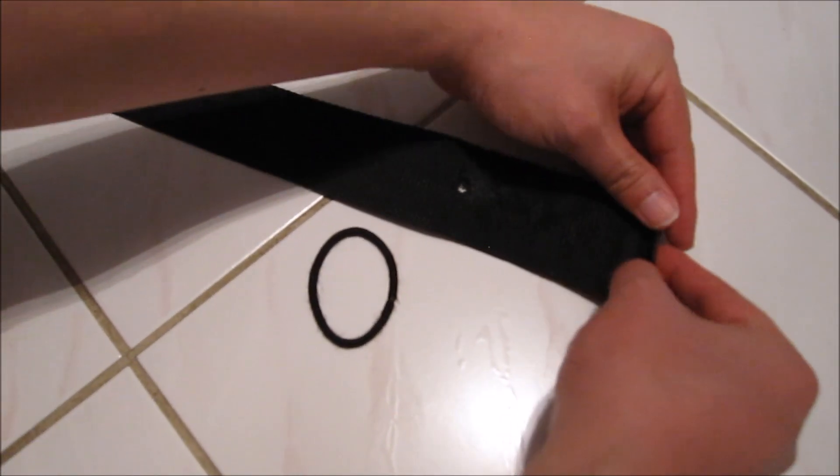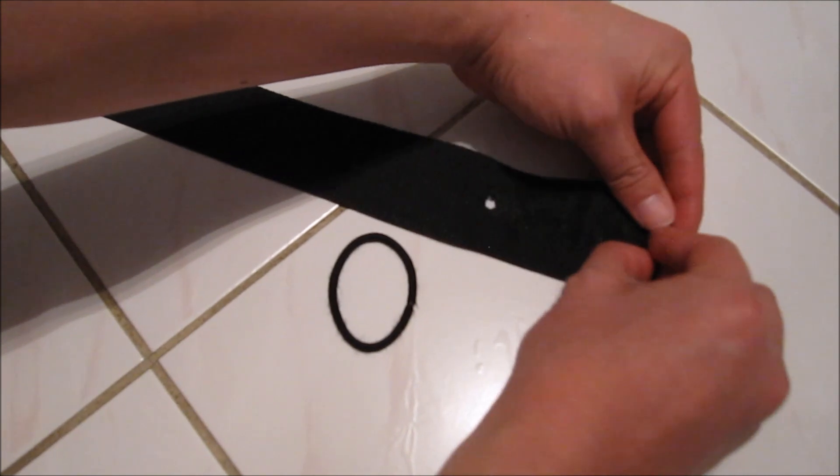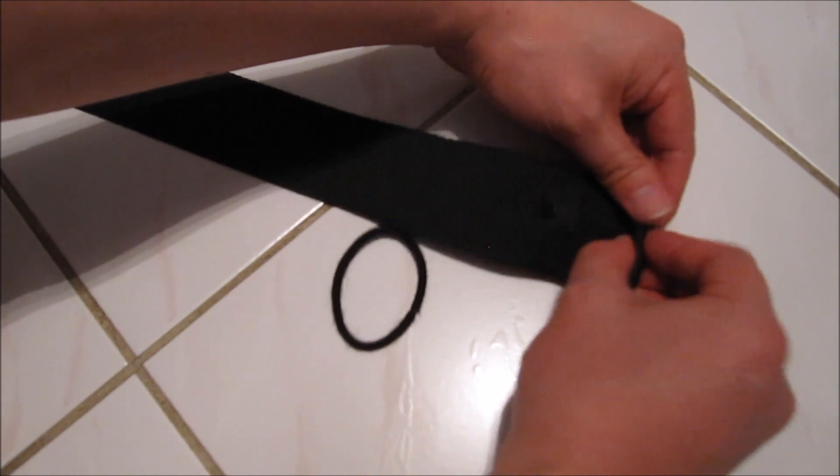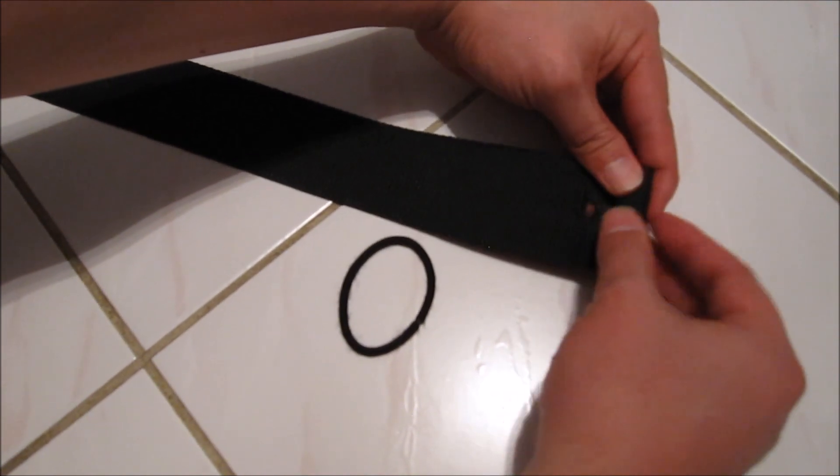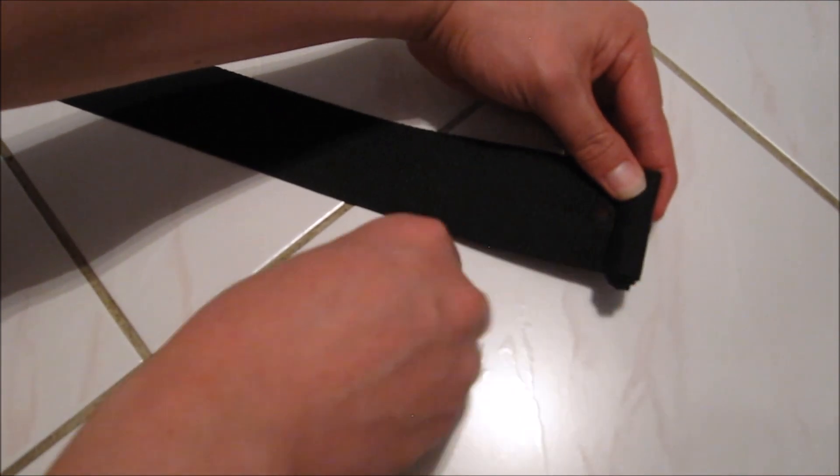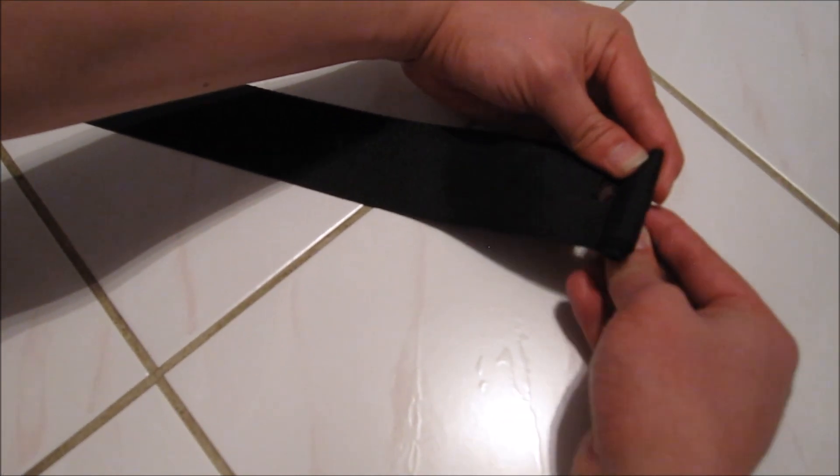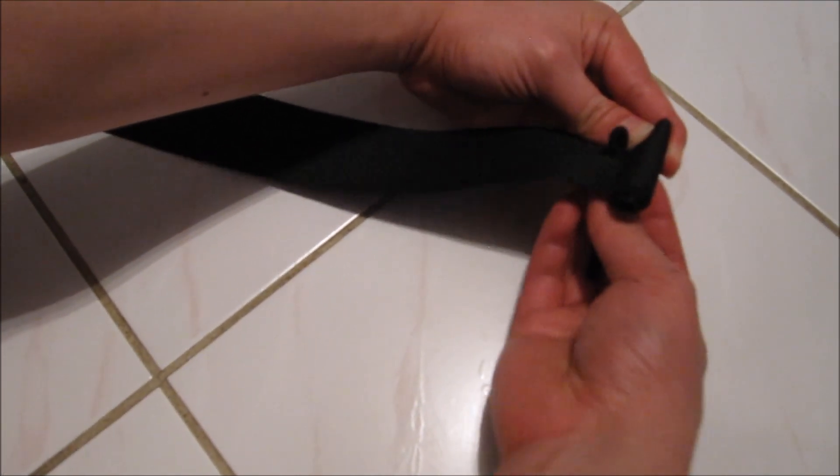So what we're going to do now is roll up the fabric as tight as we can, all the way to the hole. Alright, once you reach the hole, you take the hair band. You're going to put it together and put it through the hole, just like this.